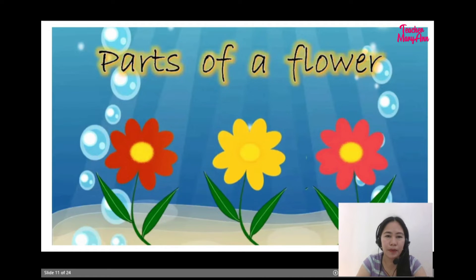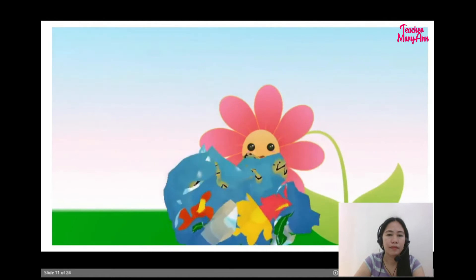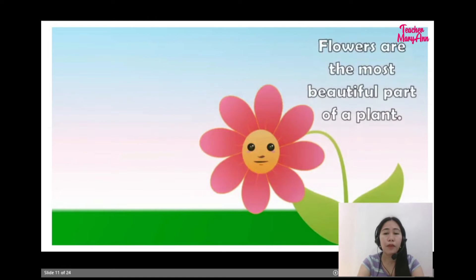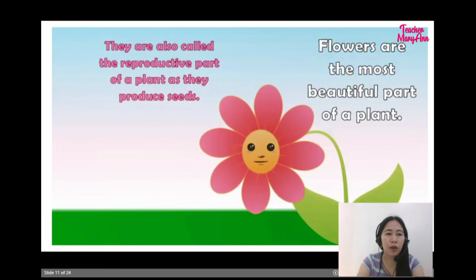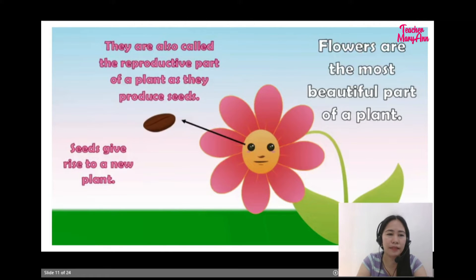Parts of a flower. Flowers are the most beautiful part of a plant. They are also called the reproductive part of a plant as they produce seeds. Seeds give rise to a new plant.